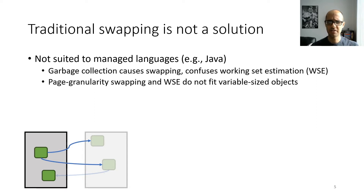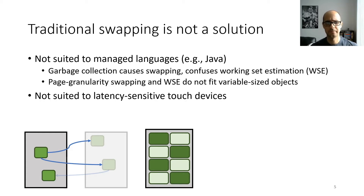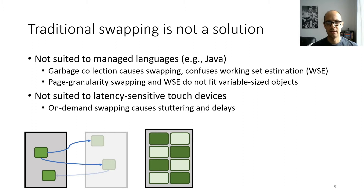Also, when the operating system does swapping and working set estimation at the page granularity, that's not a good fit when objects are not page-sized. If a page is filled with a mix of hot objects accessed frequently and cold objects that are untouched, this entire page will look hot to the OS even if only half the objects are being used. Finally, traditional swapping isn't a good fit for latency-sensitive touch devices like modern smartphones, because swapping unused memory to disk on demand during allocation can cause lengthy stuttering and delays on the allocation critical path.